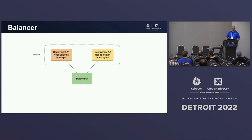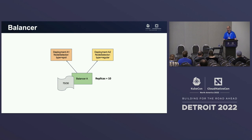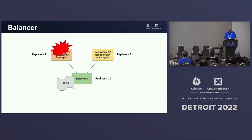The Balancer's main task will be to properly size these deployments. Each Balancer will have a placement policy, according to which it will distribute replicas across its targets. For example, with a proportional policy of 70-30, it will distribute 10 replicas like this: seven will go to the first one that runs on Spot, and three to the other one that runs on regular on-demand VMs.